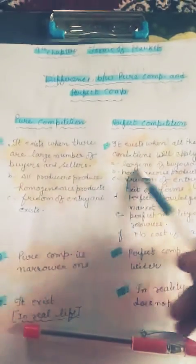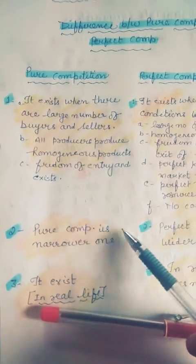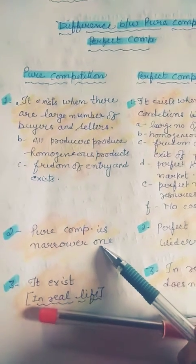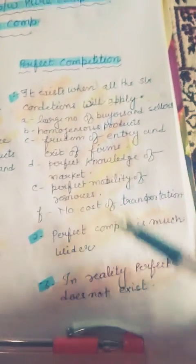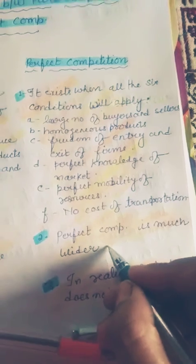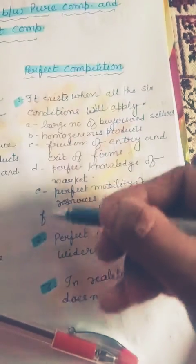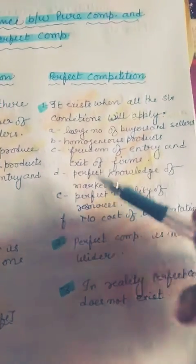This is the first point of difference. The second point: pure competition is a narrower concept because only three conditions are applied. But in perfect competition, it is a wider concept because all six conditions are applied. We have already covered all six conditions previously and today again.